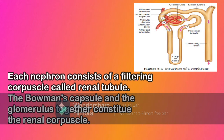The Bowman's capsule and the glomerulus together constitute the renal capsule. The endothelium of the glomerulus has many pores or fenestrations. The external parietal layer of Bowman's capsule is made up of simple squamous epithelium, and the visceral layer is made up of epithelial cells called podocytes. The podocytes end in foot processes that cling to the basement membrane of the glomerulus. The openings between the foot processes are called filtration slits.